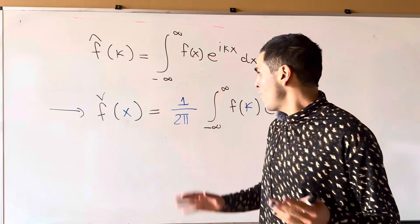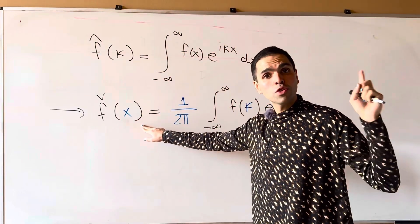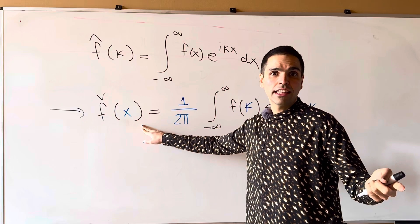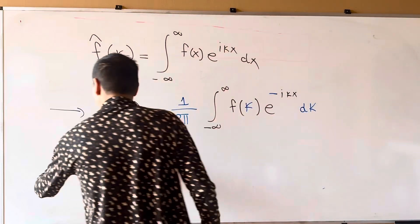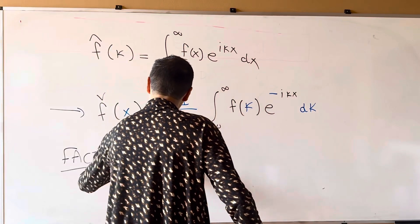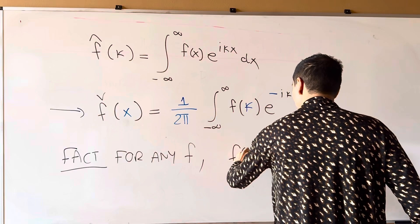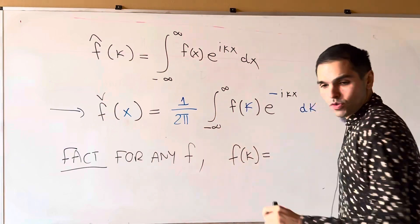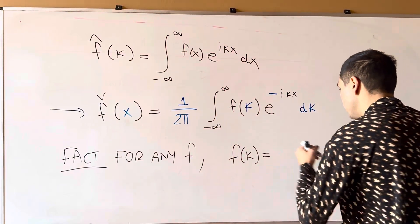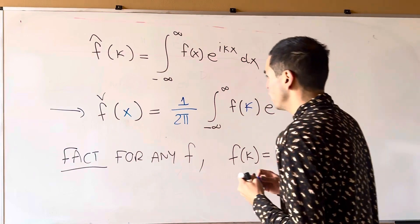And the beautiful fact is, the inverse Fourier transform answers precisely the question that we had at the beginning. So fact, for any f, f is the Fourier transform of some function g. So f of kappa is g hat of kappa, where g is the inverse Fourier transform.